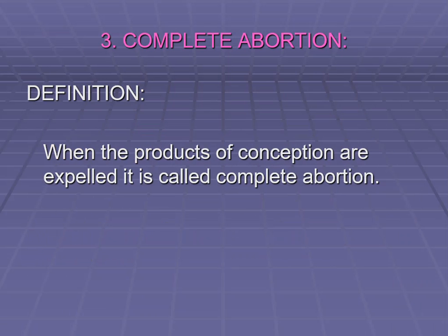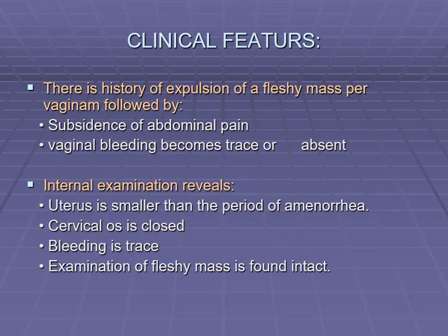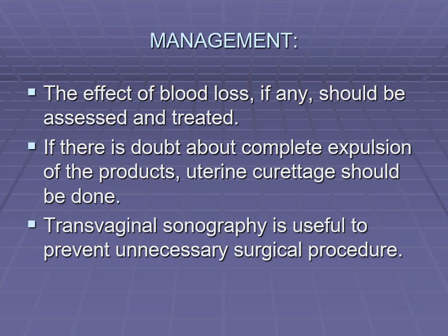Complete abortion means the whole products of conception have been completely expelled. When the products of conception are expelled as a mass, it is called complete abortion. Features include expulsion of a fleshy mass from the vagina, subsidence of abdominal pain, and vaginal bleeding becomes trace or absent. On internal examination, the uterus is small, cervix is closed, bleeding is very trace, and the mass is found intact. Management involves checking and treating blood loss; if doubtful or incomplete, curettage is done and transvaginal sonography is performed.